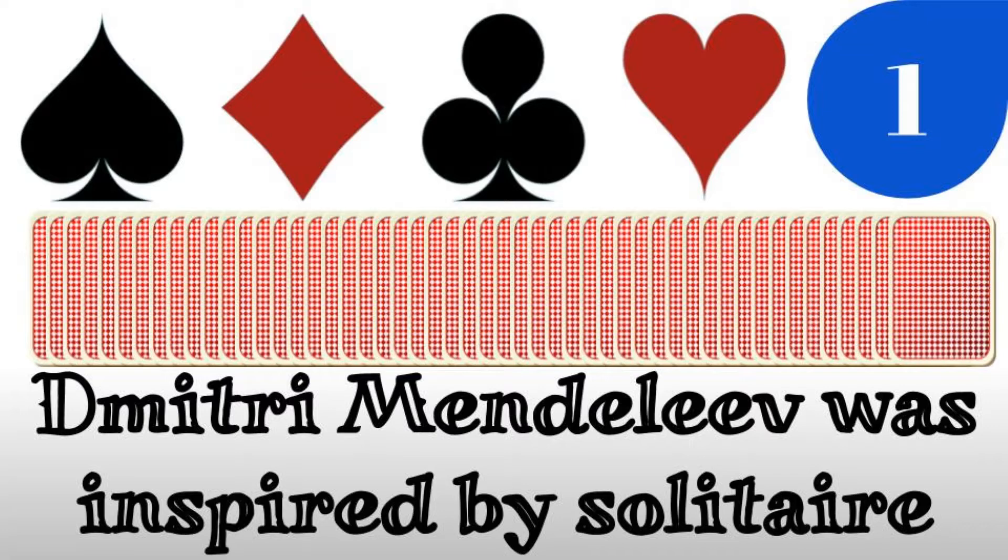Then he began his advanced game of Chemical Solitaire. He stacked elements according to specific properties, which is similar to the suit in Solitaire. Then he arranged them based on atomic weight and made a table of them. This is how the Periodic Table was made.